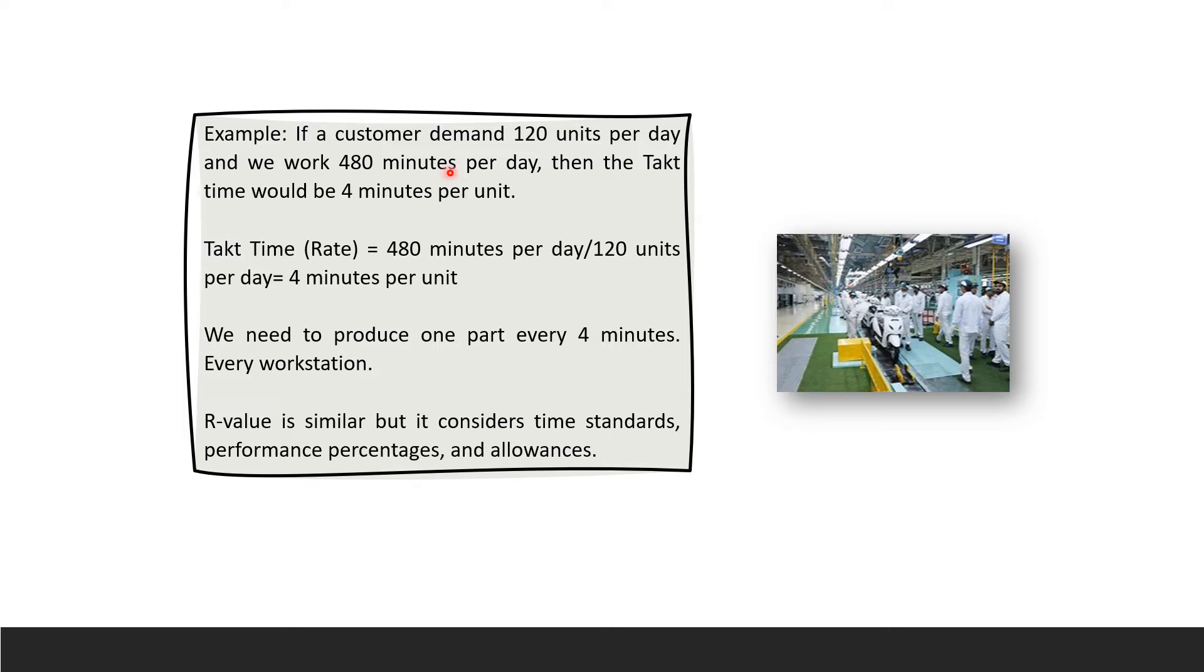Here's an example. If a customer demands 120 units per day and we work 480 minutes per day, then takt time equals 480 minutes per day divided by 120 units per day. Per day cancels out, so you get 4 minutes per unit. That's your rate.